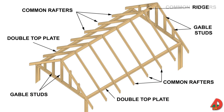Next to the shed roof, which has only one slope, the gable roof is the easiest type of pitched roof to build because it slopes only in two directions. The basic structural members of a gable roof are common rafters, gable studs, and ridge board. Gable and gambrel roofs slope in two directions, while shed roofs only slope in one direction. The ridge board serves as a nailing base for the common rafters.